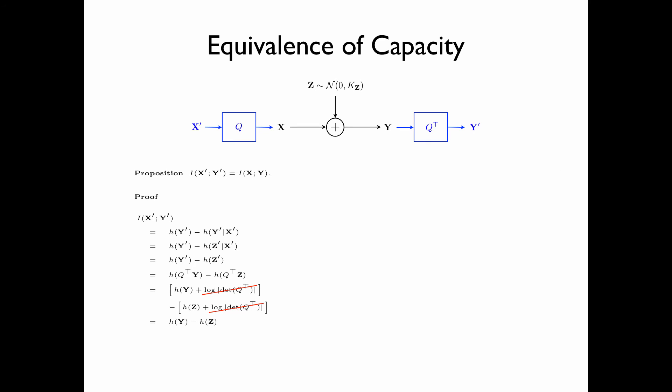In the remaining steps, we reverse what was done at the beginning of the proof. Namely, h(z) = h(z | x), which in turn equals h(y | x). Therefore, h(y) − h(y | x) = I(x; y). This proves the proposition that I(x'; y') = I(x; y).